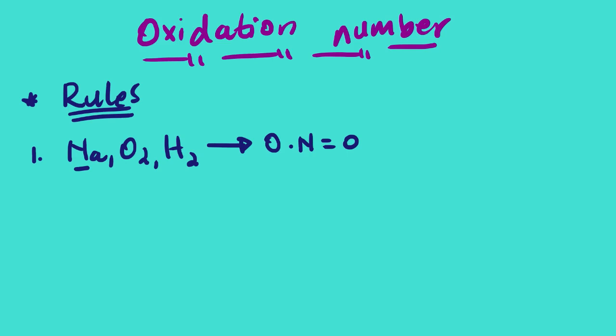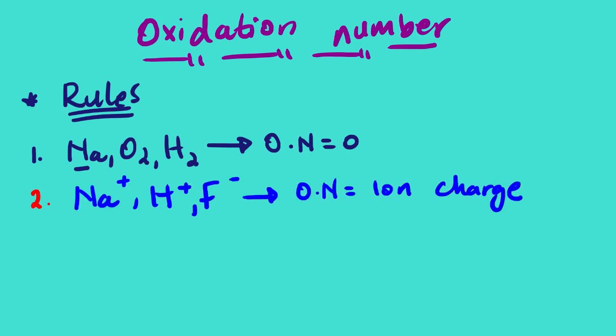The second rule: for monatomic ions, the oxidation number is equal to the ionic charge. For example, the oxidation number of the fluoride ion is 1−, for the hydrogen ion it is 1+, and for the sodium ion it is 1+.